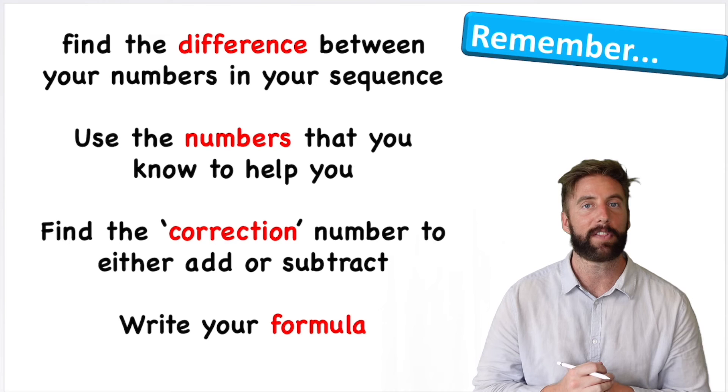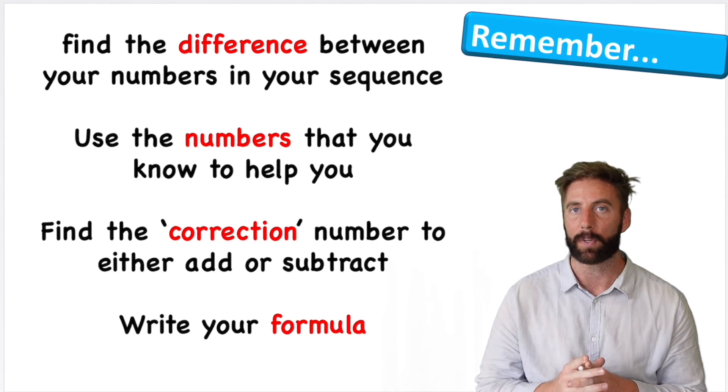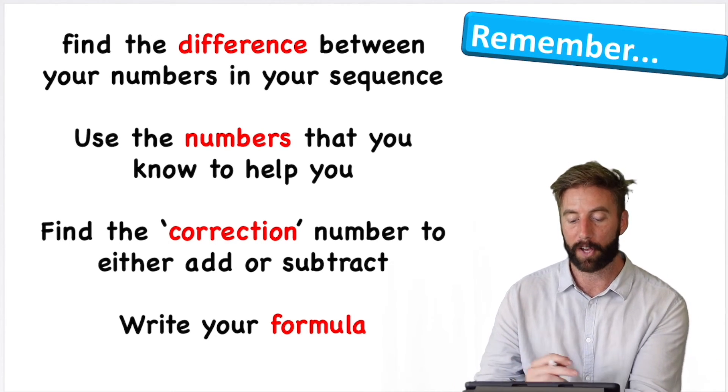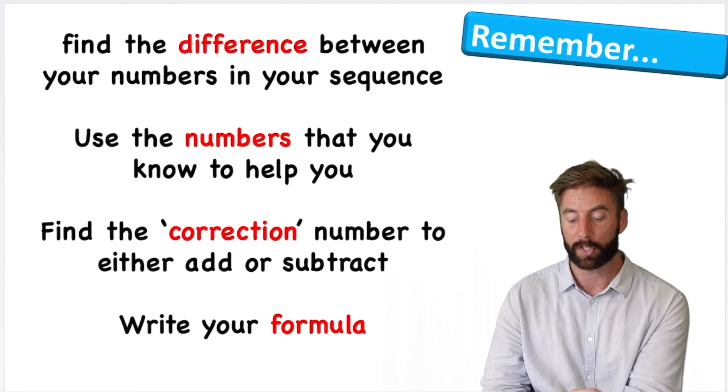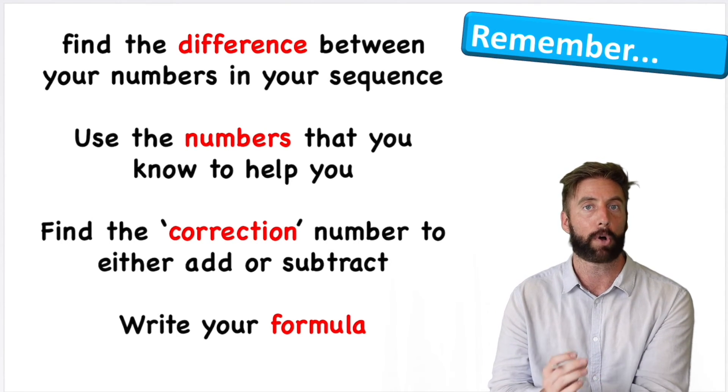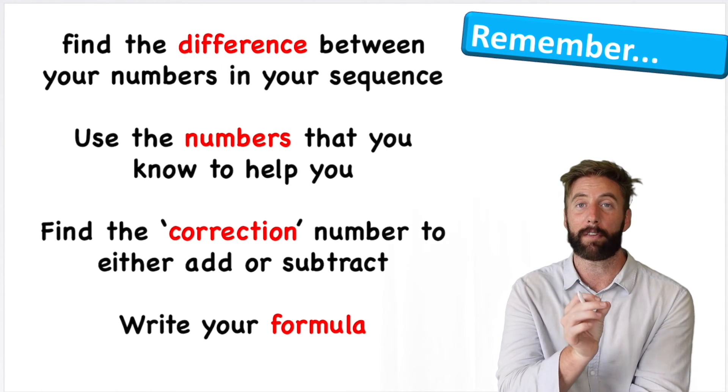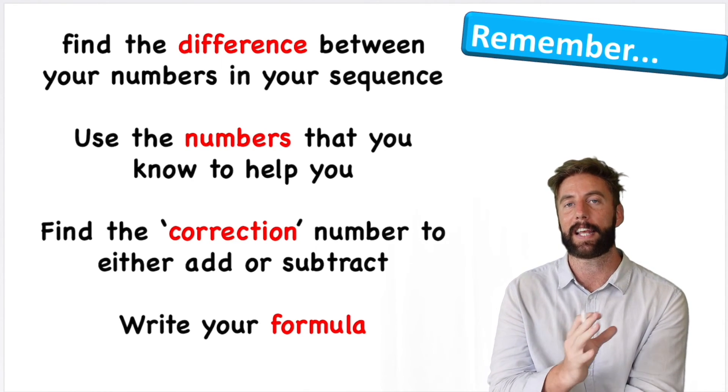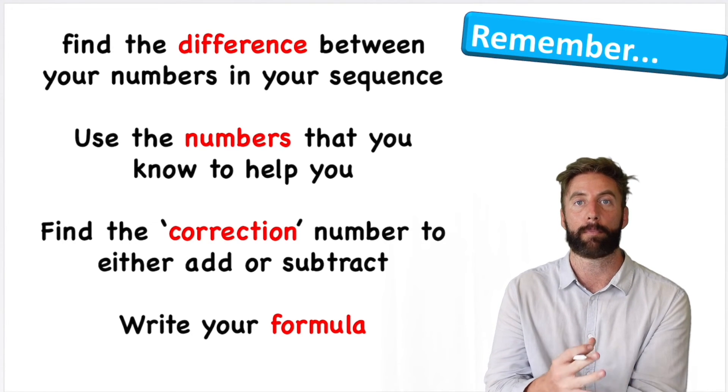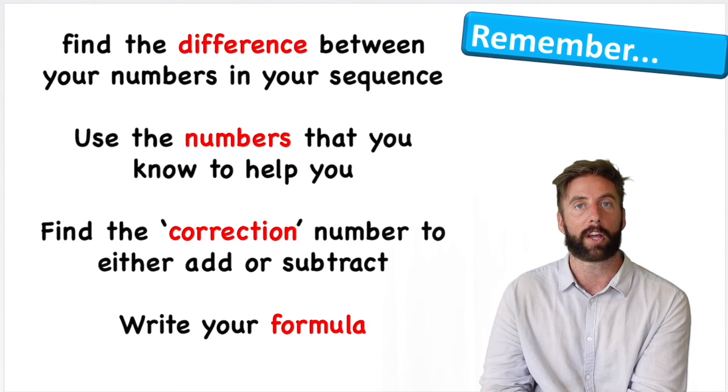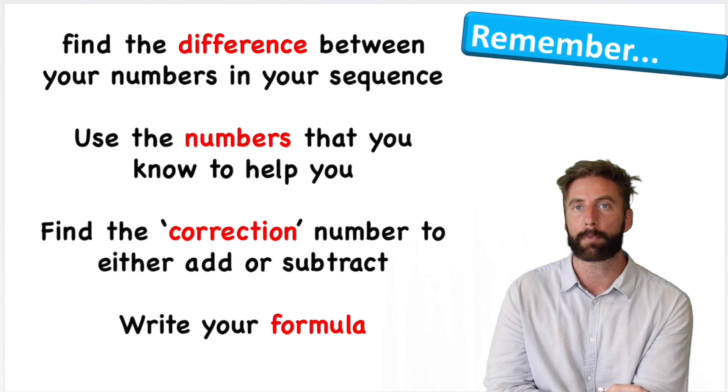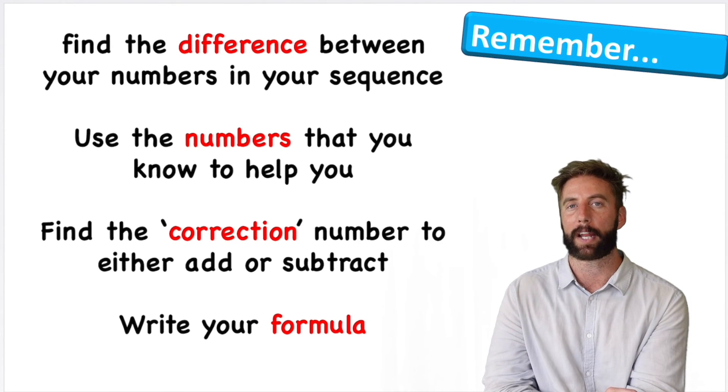And there you go. That is everything you need to know about finding the nth term to a linear sequence. Let's look at things to remember. First, find the difference between your numbers in your sequence, whether that's positive numbers or negative numbers if we're coming backwards. Multiply your difference by your nth term, and then see how close you are and find the correction by adding or minusing a number to it. And then finally write your formula. And just check your formula works before you move on, just to make sure you've not made any mistakes.